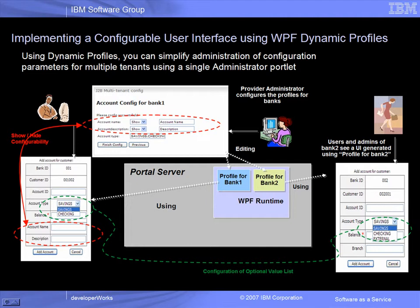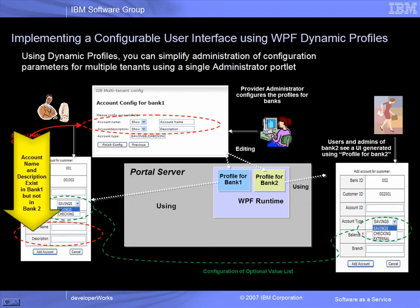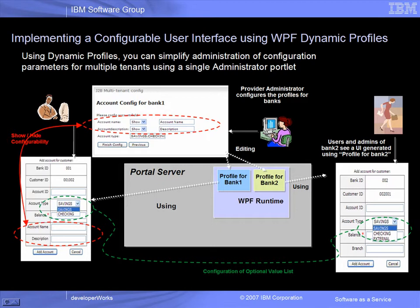Tenant-specific customizations can be created by applying those configured profiles to their portlets at runtime to change the appearance, content, and behavior of the portlet. For example, the provider administrator can configure the portlet fields account name and account description to show in Bank 1's Add Account for Customer portlet. However, these fields can be hidden from the same portlet for Bank 2. A provider administrator can also change the list box selections for the account type element so that the choices differ amongst the tenants.